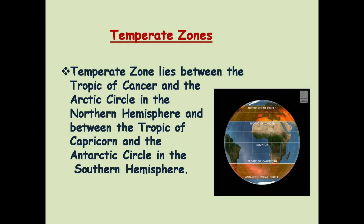Now we will discuss about the second zone, which is the temperate zone. The temperate zone lies between the Tropic of Cancer and the Arctic Circle in the Northern Hemisphere, and between the Tropic of Capricorn and the Antarctic Circle in the Southern Hemisphere. As you know, there are two hemispheres — the Northern Hemisphere at the top and the Southern Hemisphere at the bottom. The temperate zone gets the slanting rays of the sun, as the angle of the sun's rays decreases towards the pole. Thus, this zone experiences a moderate climate throughout the year.